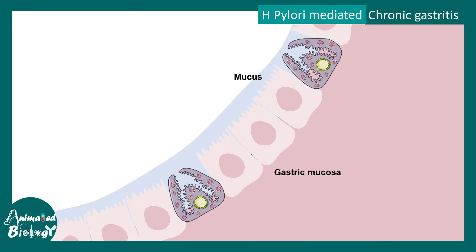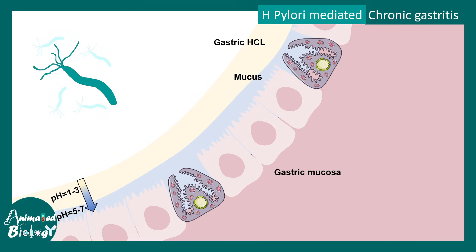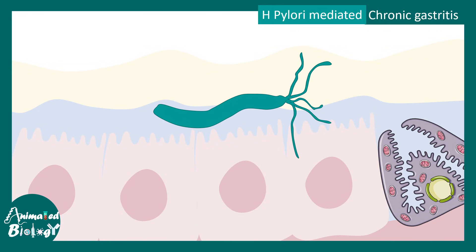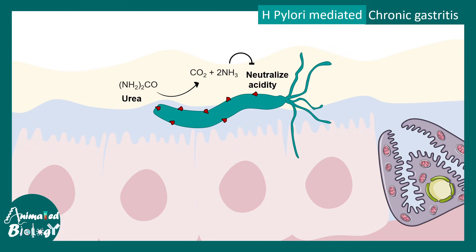The gastric mucosa has a thick layer of mucus outside and gastric HCl inside. Most bacteria would die in this harsh environment, but H. pylori has mechanisms to survive. H. pylori secretes urease, which buffers the pH of the strong gastric HCl, allowing the pathogen to survive. Urea gets converted into ammonia, which neutralizes the excessive acidity — this is carried out by the enzyme urease.